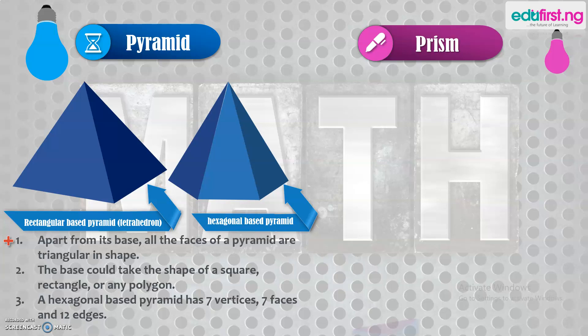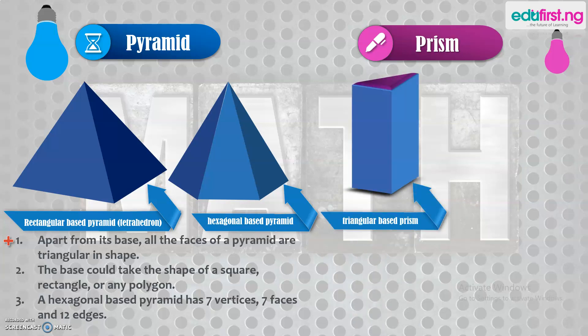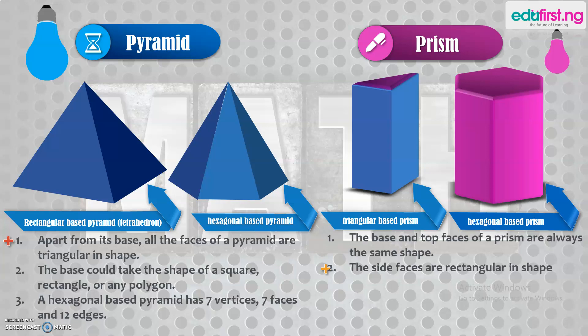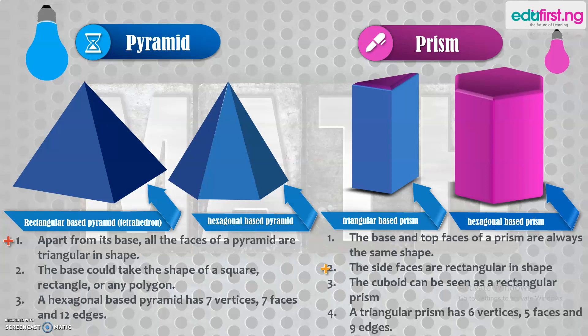A prism is also one of our solid figures today. Here's a triangular-based prism and a hexagonal-based prism. The properties of prisms are: the base and top faces are always the same, and the side faces are rectangular in shape. The cuboid can be seen as a rectangular prism. A triangular prism has six vertices, five faces and nine edges. A cylinder can also be regarded as a special kind of prism.